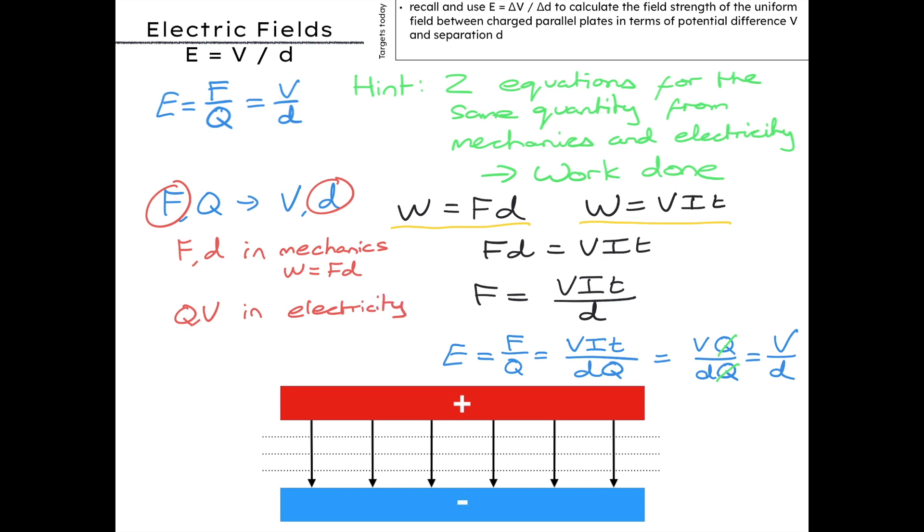Now you might start thinking about V equals IR. So V equals IR equals QR over T. But doing this, we're introducing something totally unrelated, resistance. So that seems unlikely to help.